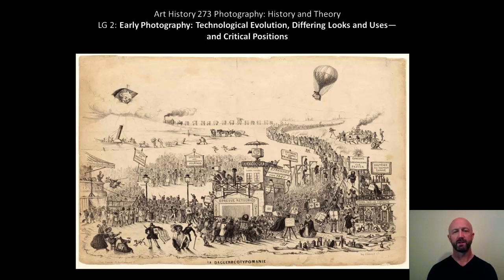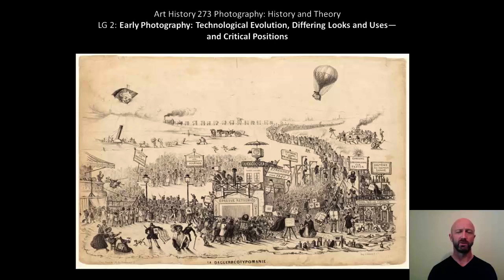Hi everyone. Welcome to lecture guide number two, the second content-based lecture for the course. In today's lecture, we're going to be looking at early photography — basically from the 1830s up near the end of the century — focusing on the technological evolution, the differing looks and usages of various types of photography, as well as some of the emergent critical positions on what photography should be, what it should be used for, and how you should do it.